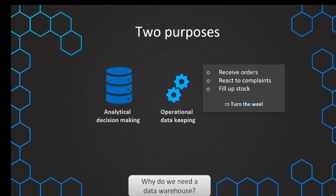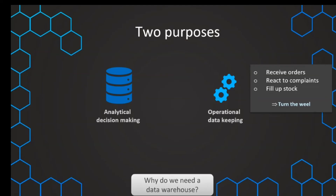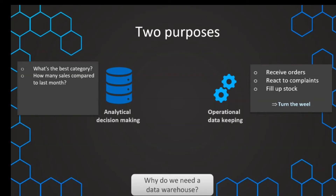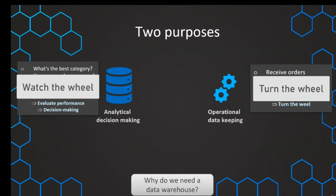Then of course we also want to use the data to make better decisions for the future and understand our company. Here we want answers to questions like: what is the best category we're selling products in, what is the number of sales this month compared to last month, and what can we do to improve things? So basically we want to evaluate performance and make better decisions in the future. While operational data keeping keeps the wheel turning, in analytical data processing we want to watch how that wheel turns and what we can improve.